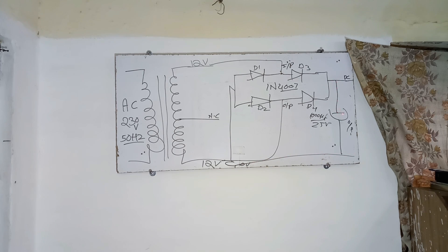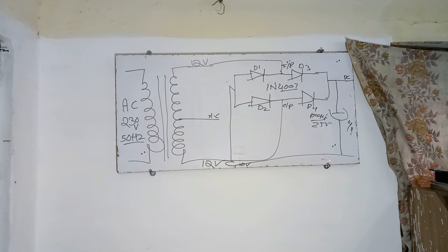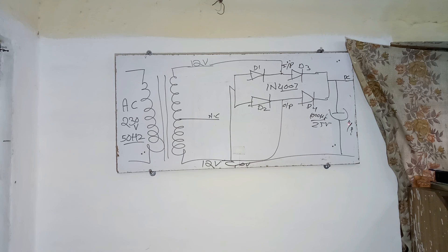And I will filter this circuit with a 1000 microfarad 25 volt electrolytic capacitor. The filtered DC output is coming from this place — this basic output.